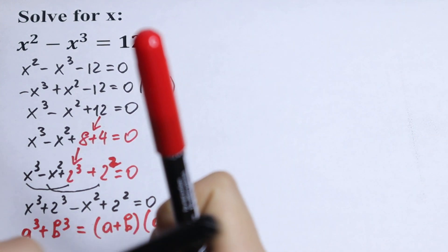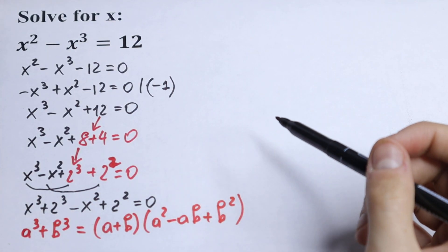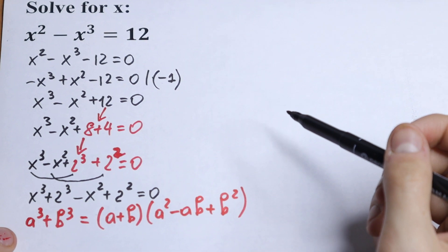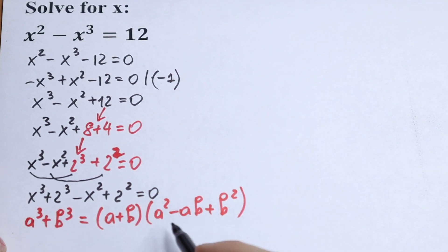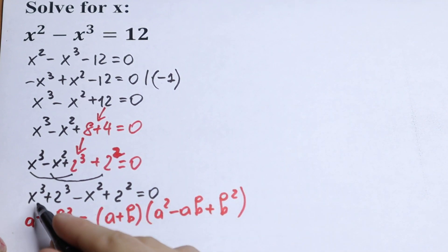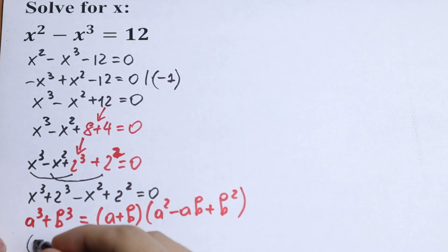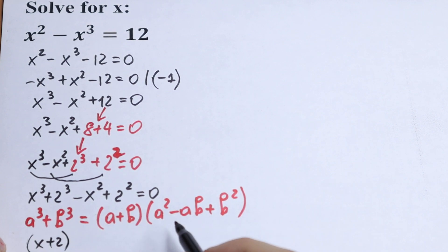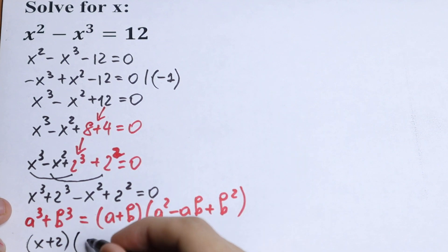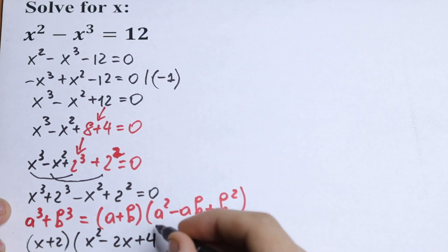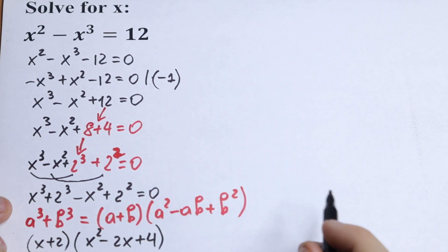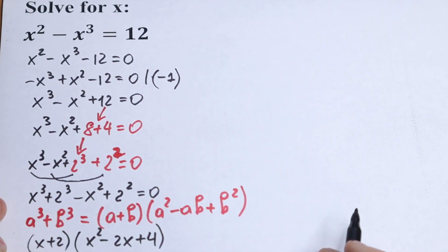Let's use our formula right here. We will have x plus 2, and in the second parentheses we will have x squared minus 2x plus 4. Just use the sum of cubes formula.